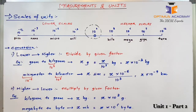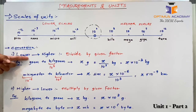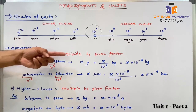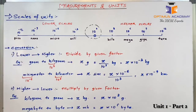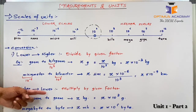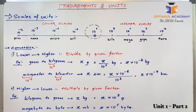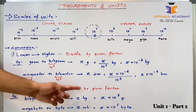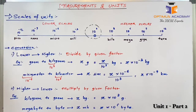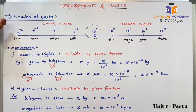So in this video, we have understood that to convert lower scales of unit to higher scales, we divide by the given factor. Whereas to convert higher scales to lower scales, we multiply by the given factor. Please remember this scale of unit — we will need it while solving numericals in physics. Thank you.